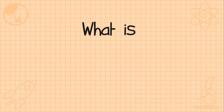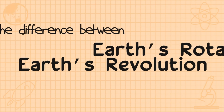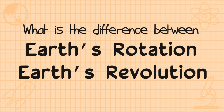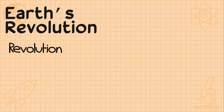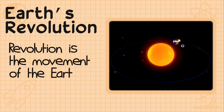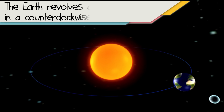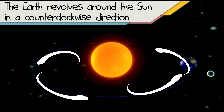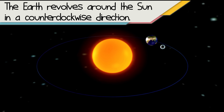Now that you know about the Earth's rotation, let's talk about the Earth's revolution. What is revolution, and what is the difference between rotation and revolution? Revolution is the movement of the Earth around the Sun. The Earth revolves around the Sun in a counterclockwise direction.